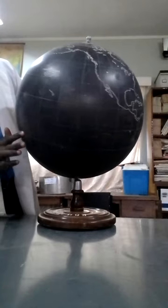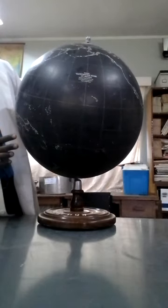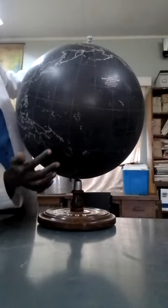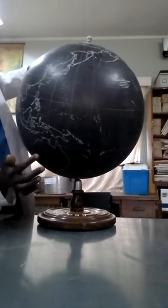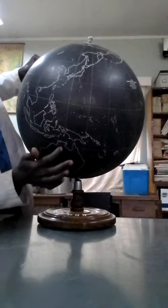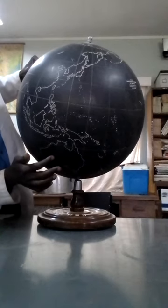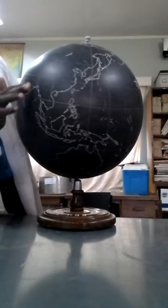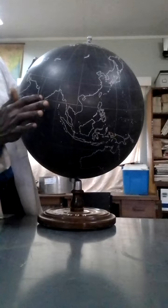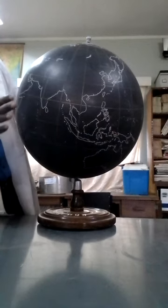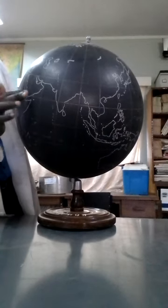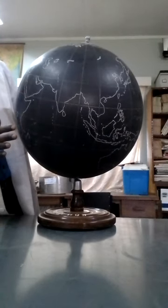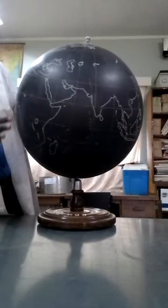Then we have the Pacific Ocean, a very big ocean. Coming here we find that this one is Australia, this one is Asia — you can see India is here, and South Arabia and so on — and we come back to Africa.